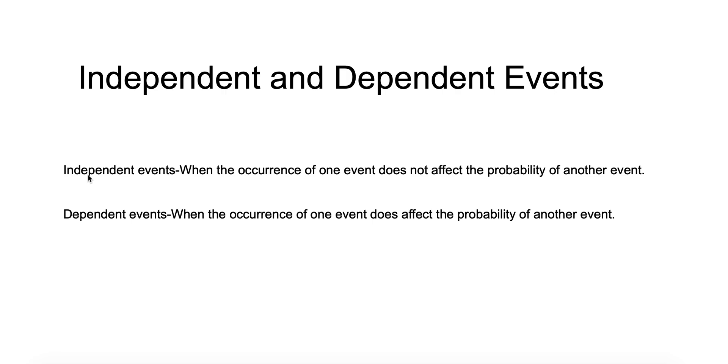This is where things don't affect each other. A dependent event is when the occurrence of one event does affect the probability, so it changes the probability of the second one, where the first one doesn't change the probability. Let's look at some examples.